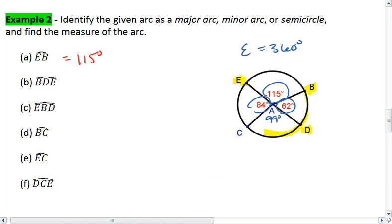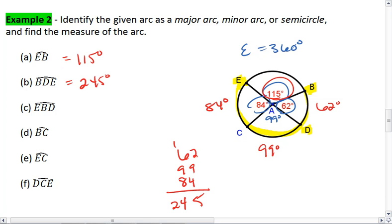So arc BDE will be 62 degrees plus 99 degrees plus 84 degrees. I get 245 degrees. We could have also seen it's going to be 360 minus 115, which would also give me 245 degrees.